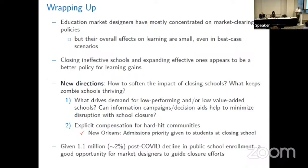Let me wrap up with a stylized fact many people in K through 12 education are grappling with. After COVID, there has been a massive decline in public school enrollment — about 2% of kids no longer go to public schools, equivalent to erasing the entire New York City public school district of 1.1 million kids from the ledger. Districts are going to have to close schools, and this is a great opportunity for market design to have some role in that conversation — at least it should be based on some measures of effectiveness. I think that's an exciting direction for us.